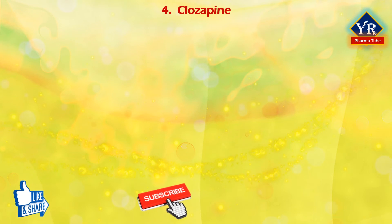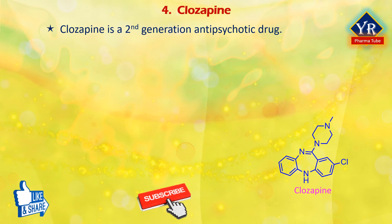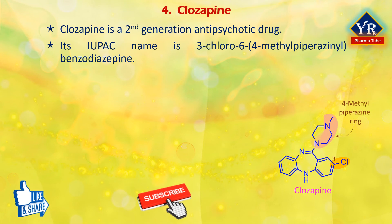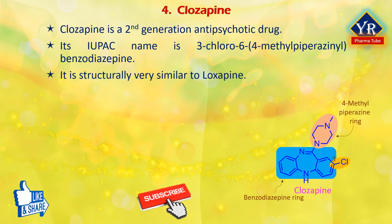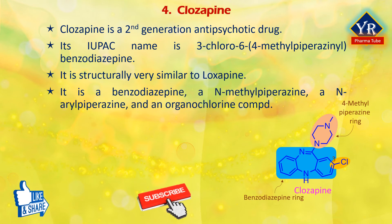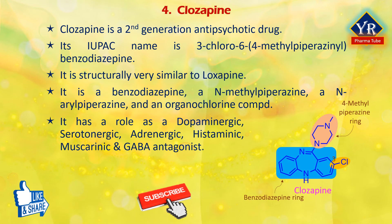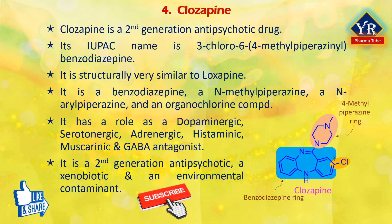The last drug of this lesson is clozapine. Clozapine is a second-generation antipsychotic drug and was the first atypical antipsychotic drug approved for the treatment of schizophrenia. Its IUPAC name is 3-chloro-6-(4-methylpiperazinyl)-11H-dibenzo[b,e][1,4]diazepine. It is a synthetic dibenzodiazepine derivative structurally very similar to loxapine, with a chloro group at position 8 and a 4-methylpiperazinyl group at position 11. It is a benzodiazepine, an N-methylpiperazine, an N-arylpiperazine, and an organochlorine compound. It has a role as a dopaminergic, serotonergic, adrenergic, histaminic, muscarinic, and GABA antagonist. It is a second-generation antipsychotic, a xenobiotic, and an environmental contaminant.